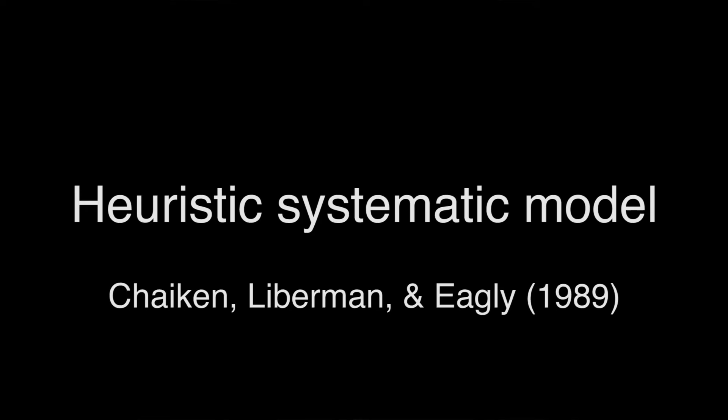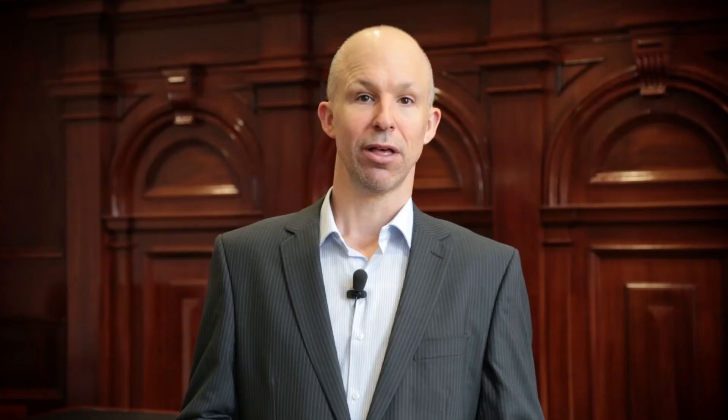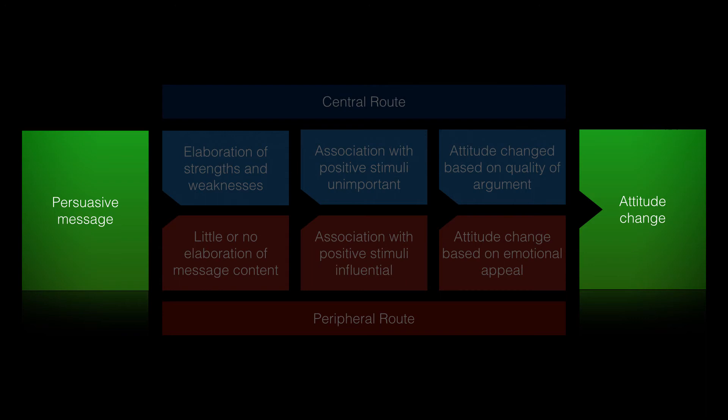There's another set of models that are commonly used to understand juror decision making. These are the elaboration likelihood model and the heuristic systematic model. Both are known as dual process models, meaning they describe two ways in which things happen. The models were originally developed to understand persuasion and attitude change, but they've been adapted to the jury context because it's possible to think about a jury trial as a series of persuasive messages. While there are some fine distinctions between these two models, they generally make the same predictions, so for our purposes we'll focus on the elaboration likelihood model.